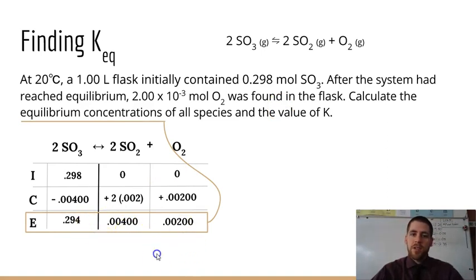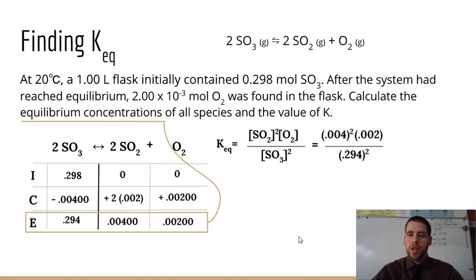Now that you have equilibrium, now you can find K. Here's our K expression. Remember to square these two because we have 2s in our balanced equation, and then you can go ahead and just plug in the numbers and solve. And this one's pretty straightforward.